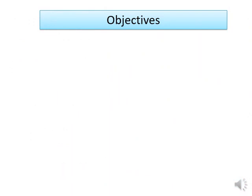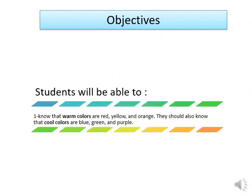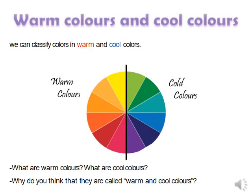The objectives for today are: students will be able to know that warm colors are red, yellow and orange. They should also know that cool colors are blue, green and purple. So let's start our lesson — warm colors and cool colors.